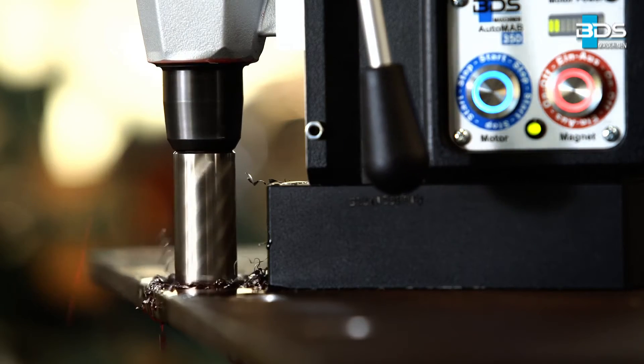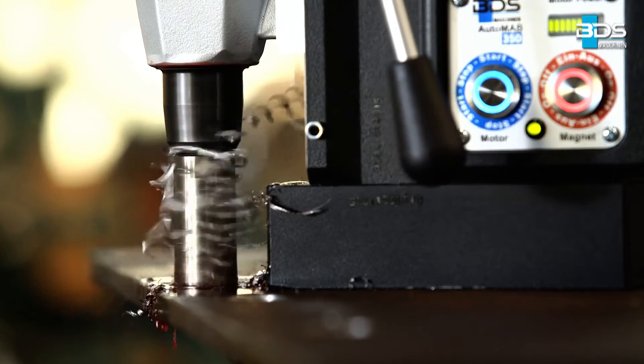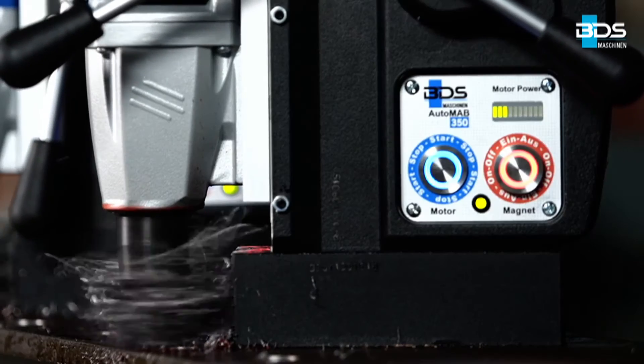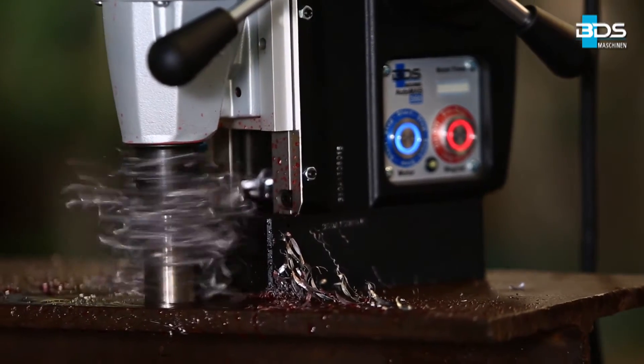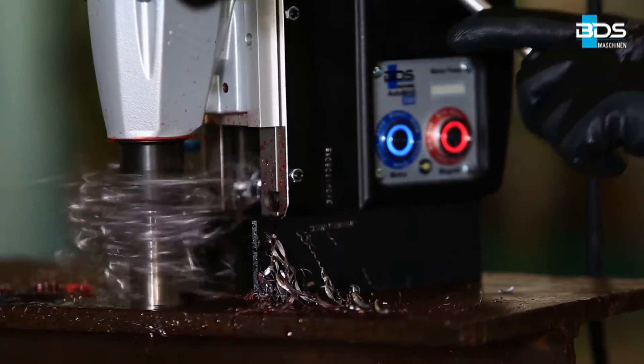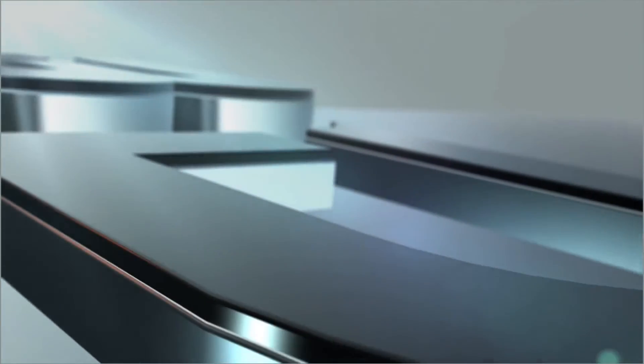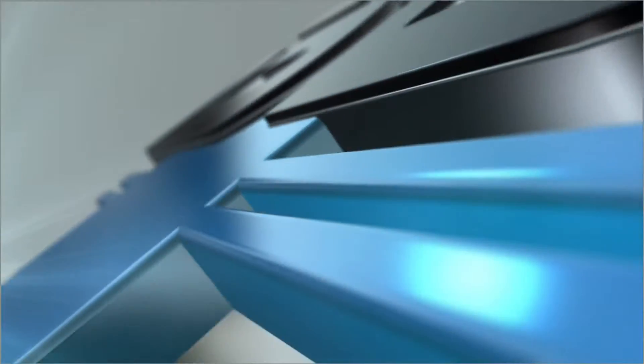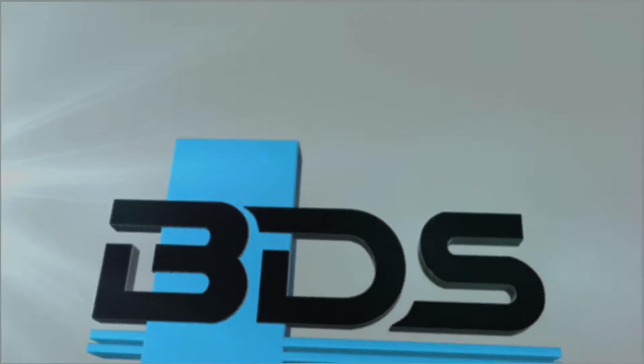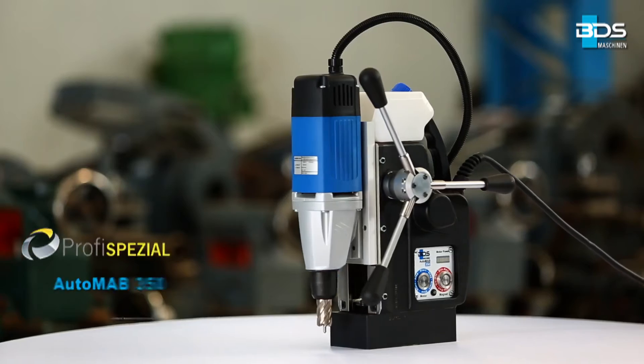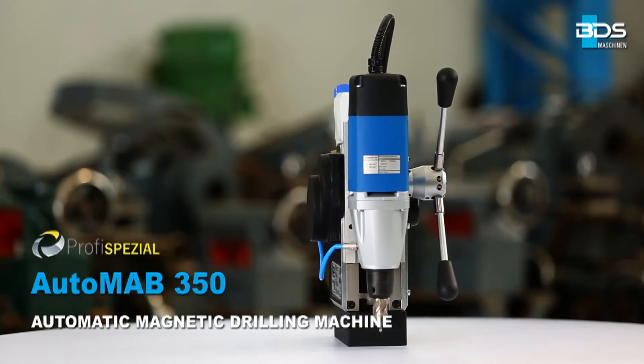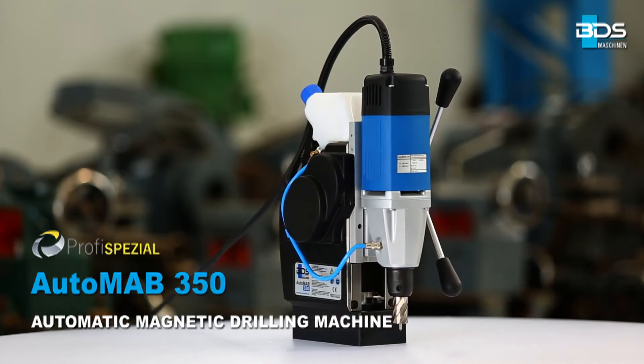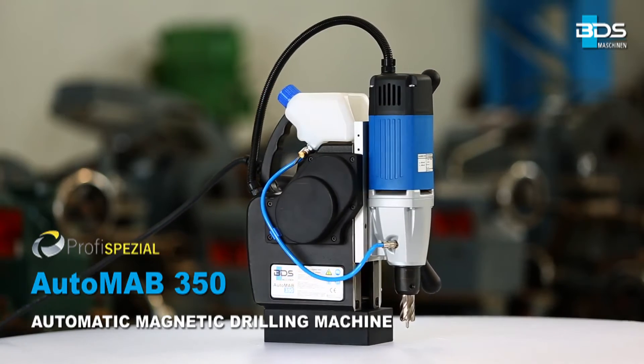The brand new lightweight, powerful, economic and automatic magnetic drilling machine. BDS Maschinen. Introducing the Automab 350, the automatic magnetic drilling machine with auto feed as well as auto reverse from the Profi Special category.